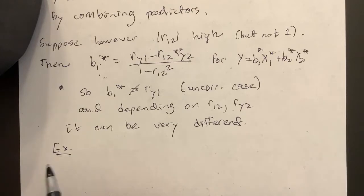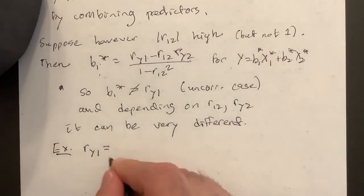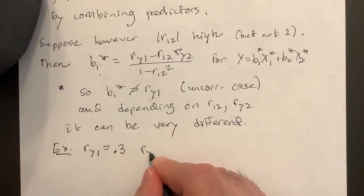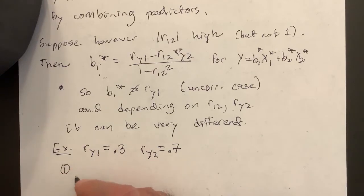So suppose R_Y1, Y is correlated with X1, say, is 0.3, and R_Y2, suppose it's a little more correlated with X2. Okay, you can make even more extreme numbers. I didn't want to make it too extreme. Doesn't have to be very extreme for it to be interesting.